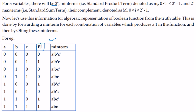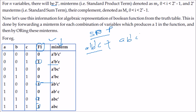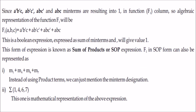For algebraic representation of a Boolean function in minterm form, we take only the rows where the function equals 1 (sum of product form). For function F1, the four 1-values correspond to terms: a-dash b-dash c, a b-dash c-dash, a b c-dash, and a b c, connected with plus signs. This is the sum of product form — we are multiplying (AND) then summing (OR).